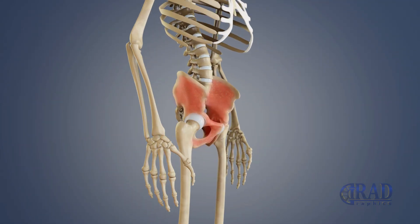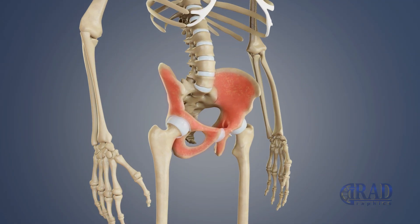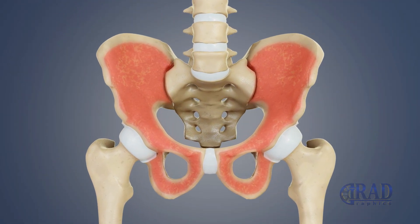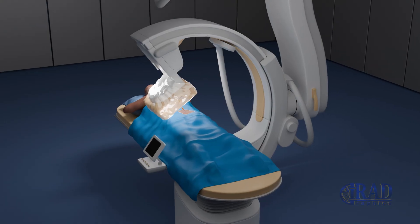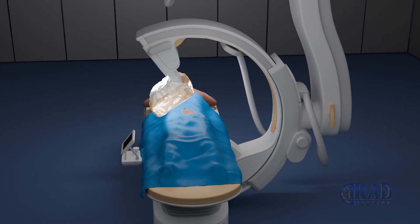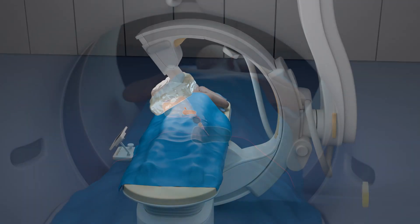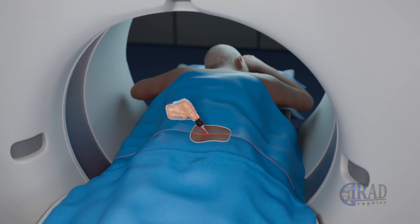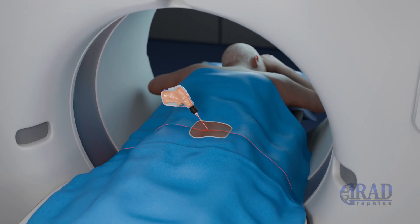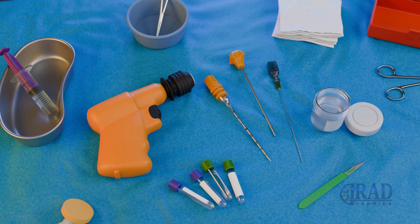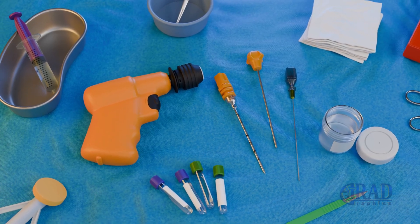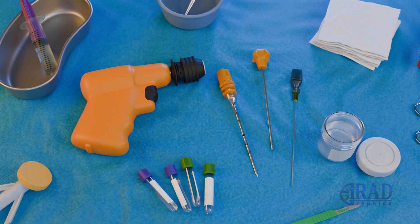Image guidance for bone marrow biopsy reduces complications and improves the success rate of bone marrow aspiration and biopsy. Fluoroscopy provides real-time visualization, making it ideal for faster procedures, while CT guidance offers higher precision, especially for deep or complex biopsy sites. This animation demonstrates the step-by-step process of performing a bone marrow biopsy using a bone biopsy needle under fluoroscopy and CT guidance.